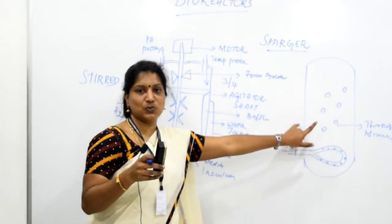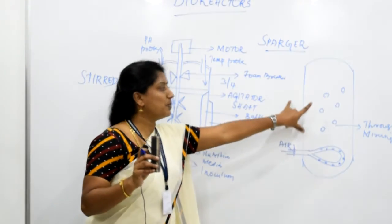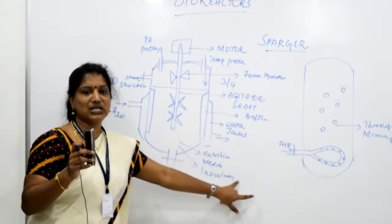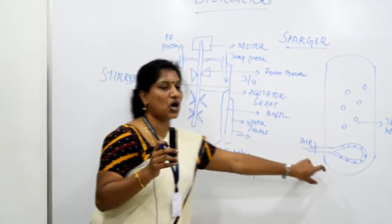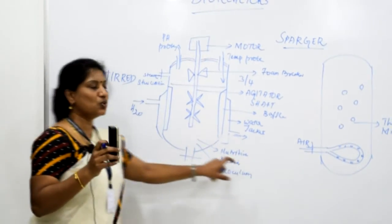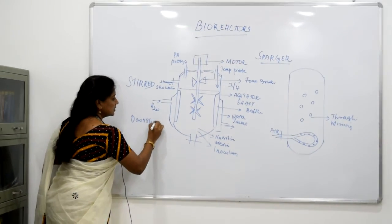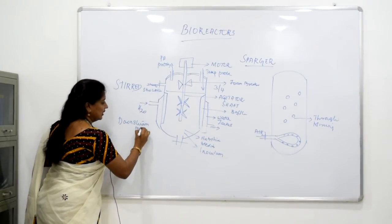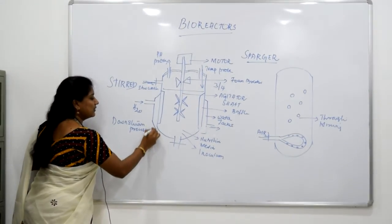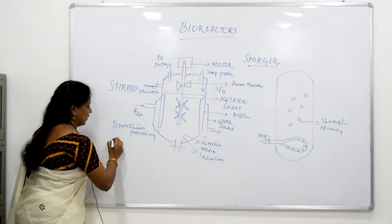These are the two types of reactors which we have seen in this class. And from this we have biotechnological products which are coming out. After the products come out we are going to take it up to a process which is called as downstream processing.